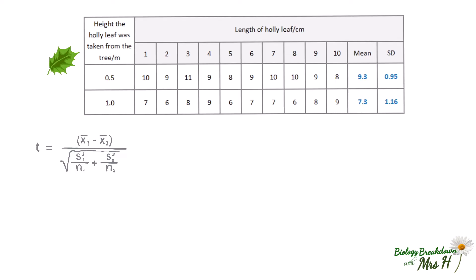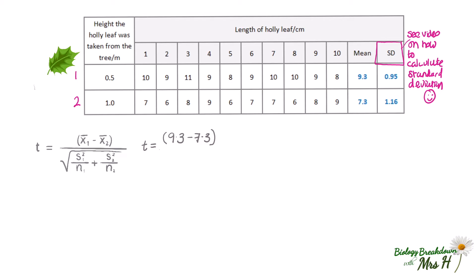We'll call the 0.5m data set 1 and the 1m data set 2. The standard deviation has already been calculated, but you do need to know how to do this — watch my video on standard deviation linked in the description, which uses this exact experiment. Now we substitute our values into the student's t-test formula. The mean of data set 1 is 9.3 minus 7.3 (the mean of data set 2), divided by the square root of the standard deviation for data set 1 squared — that's 0.95 squared — divided by n, which is 10.